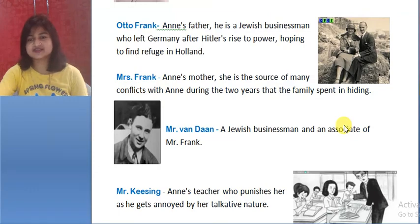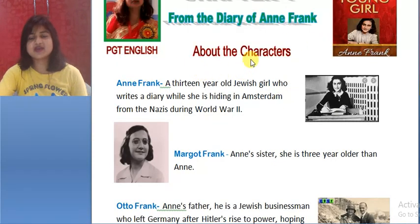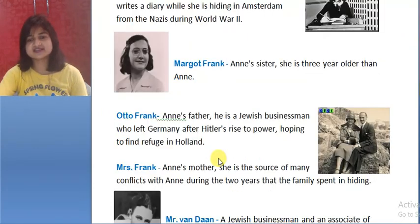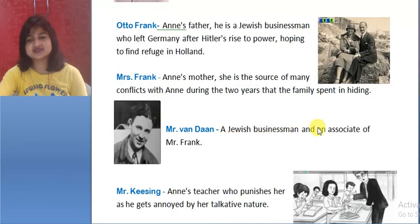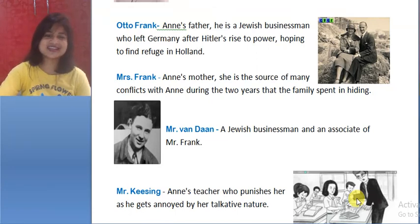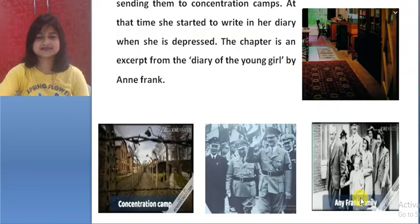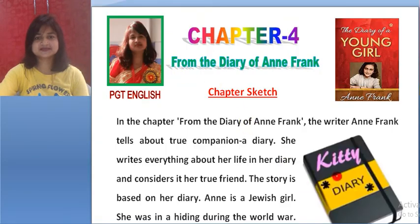Let's quickly revise the characters: Anne Frank, Margot Frank — Anne's sister, Otto Frank — Anne's father, Mrs. Frank — Anne's mother, Mr. Van Dine — Jewish businessman, Mr. Kissing — math teacher. Now you are supposed to learn these. See you later, God bless you. Thank you.